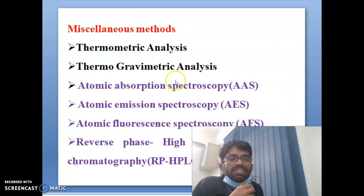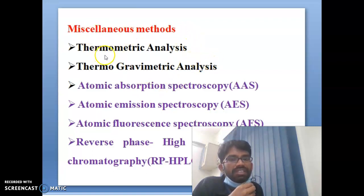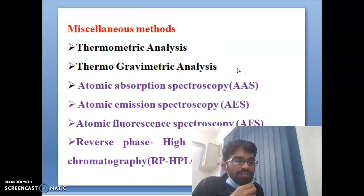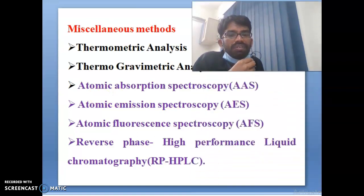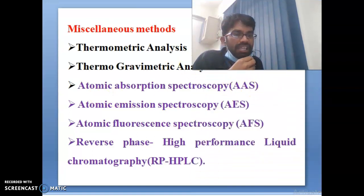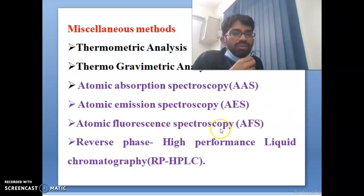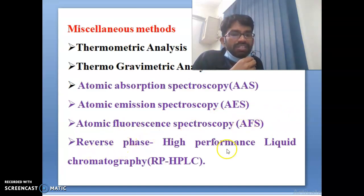Some of the analytical chemistry techniques include miscellaneous methods like temperature-dependent methods: thermometric analysis and thermogravimetric analysis (TGA). Next are atomic absorption spectroscopy (AAS), atomic emission spectroscopy (AES), atomic fluorescence spectroscopy (AFS), and reverse phase high performance liquid chromatography (RP-HPLC).